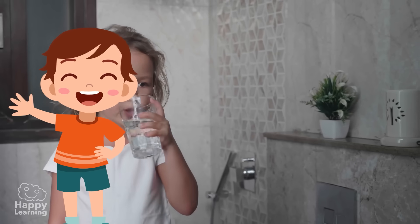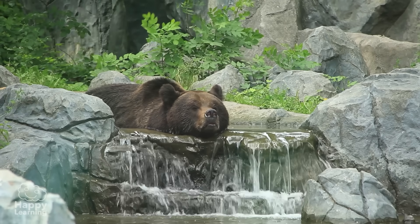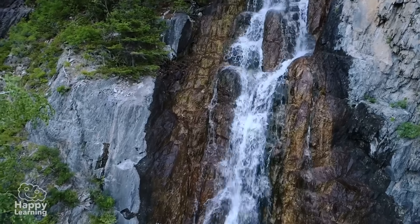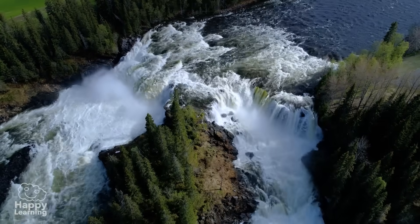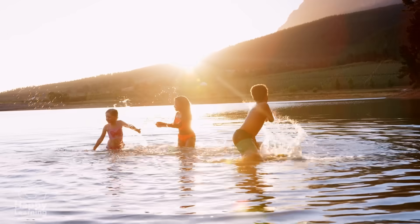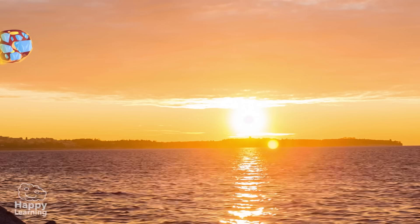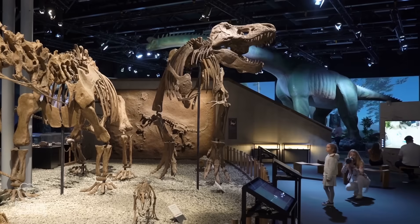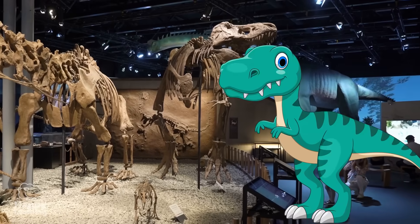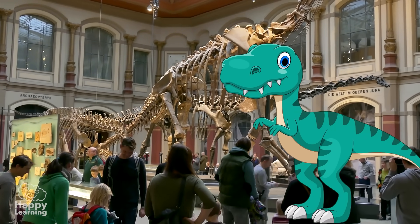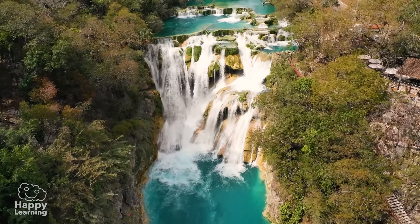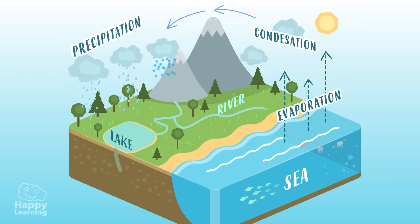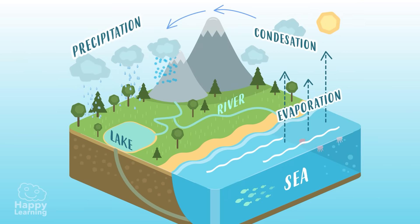There is something very important and super interesting that you should know: the water on our planet is always the same. The water we drink or bathe in is the same water brought by those comets and asteroids. It is the same water that the dinosaurs drank. Water changes state and is always travelling in the endless journey we call the water cycle.